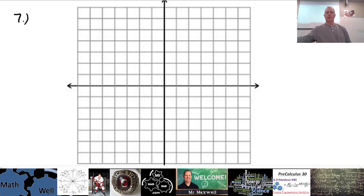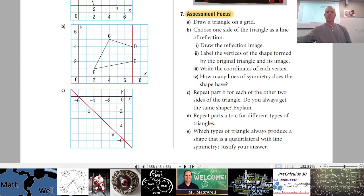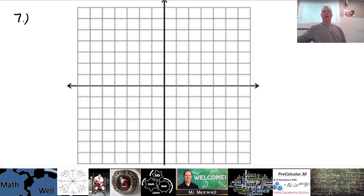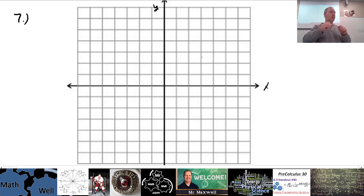There have been some questions about number seven. Number seven says draw a triangle on a grid — graph paper. You should always write your x and y axes on the graph paper so you have a frame of reference, because you're going to have to label and identify the coordinates of the vertices of these shapes.